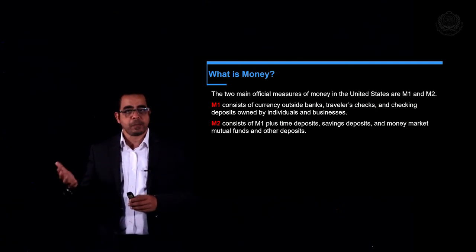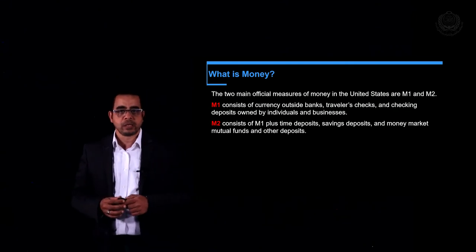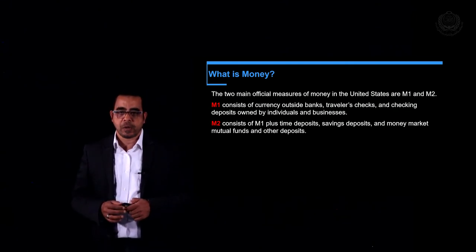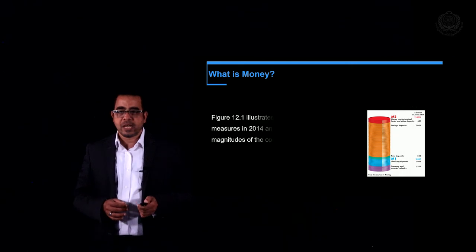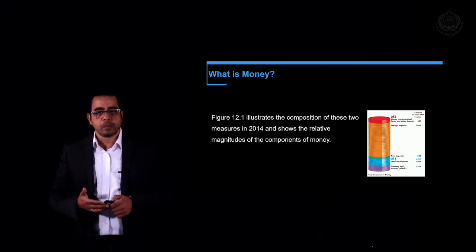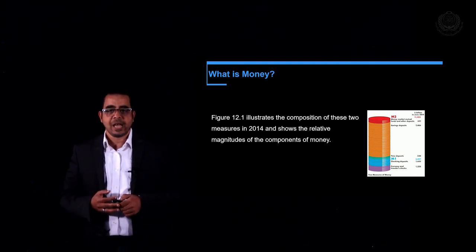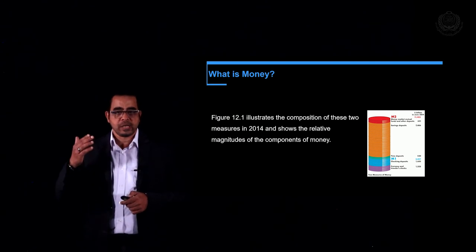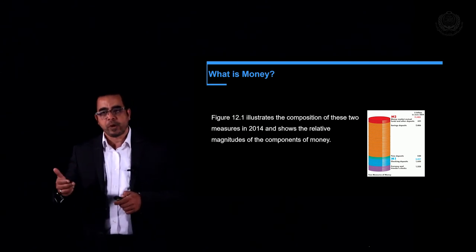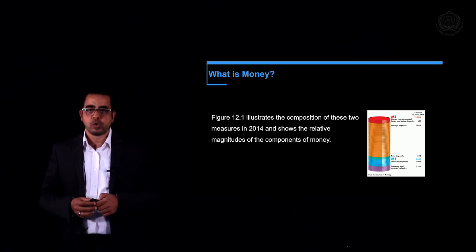M2 includes all M1 components plus time deposits, savings deposits, money market mutual funds, and other deposits. We can see the different components of money in the United States in the year 2014, showing M1 with its three components. Adding the rest of the components gives us M2.